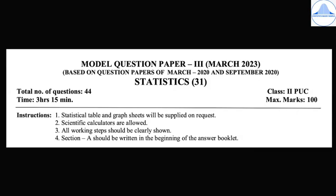The question paper will have a total of 44 questions. The time duration to solve the paper is 3 hours 15 minutes, where 15 minutes will be the reading time. The maximum marks is 100. There are certain instructions already printed: statistical tables and graph sheets will be supplied on request, you can make use of scientific calculators, and all working steps should be clearly shown.